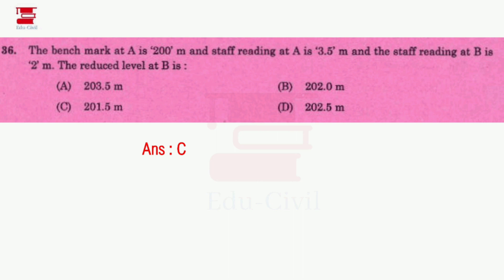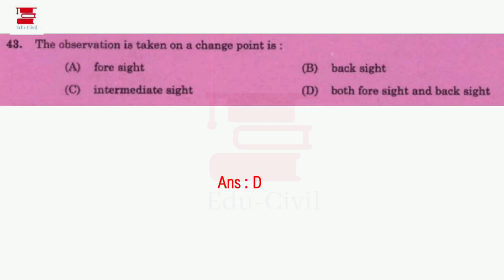HI = reduced level of benchmark plus backside = 200 + 3.5 = 203.5. Reduced level of B = HI minus foresight = 203.5 minus 2 = 201.5. On a change point, both the foresight and backside readings are taken — option D.